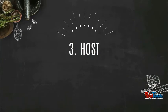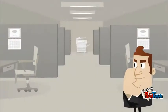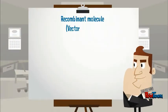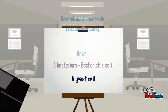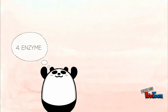The third component is the host. After successfully producing the recombinant molecule, which is the combination of vector and insert, we put it into the host through a process called transformation.